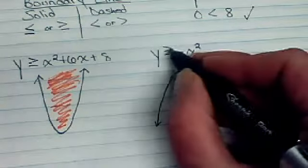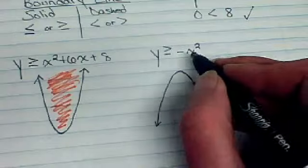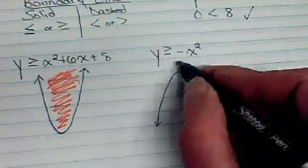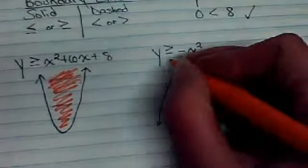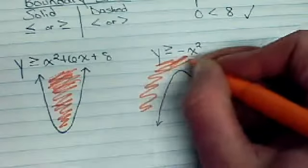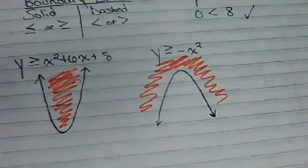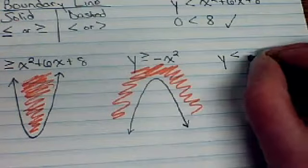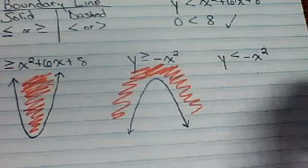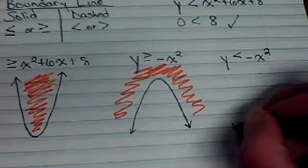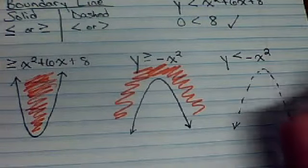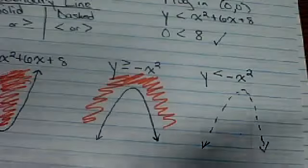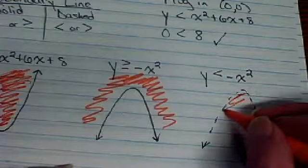But this time, if I'm graphing everything that's greater than that function, greater than would be above that vertex. We would be shading above the graph. If it was less than for a negative quadratic, and notice this one I made it a dash, less than that would be under it, so it would be below the line, which means it'd be down here.